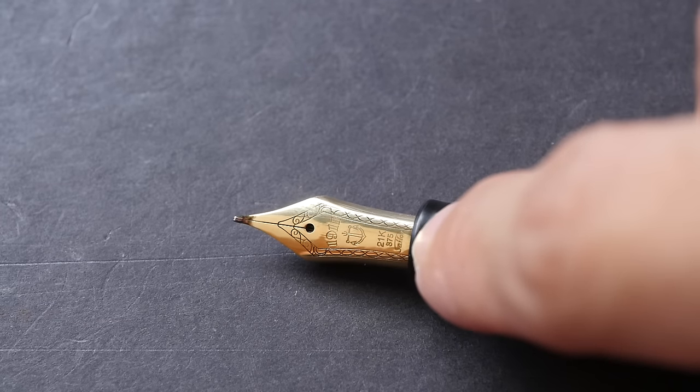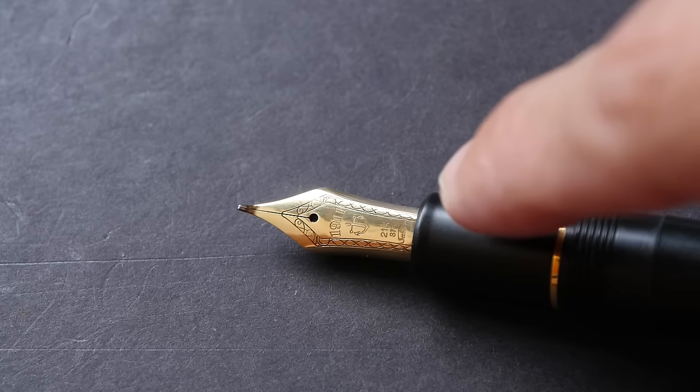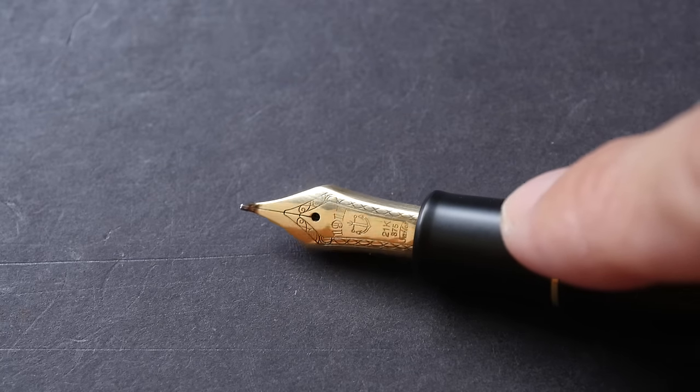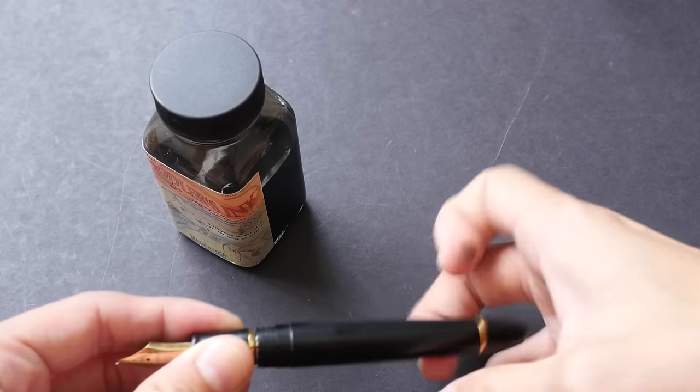On the design of the nib, let's see what's in the front - that's the Sailor logo, it's very tiny. Then we have an anchor, then we have all the design and engraving. It looks very nice.